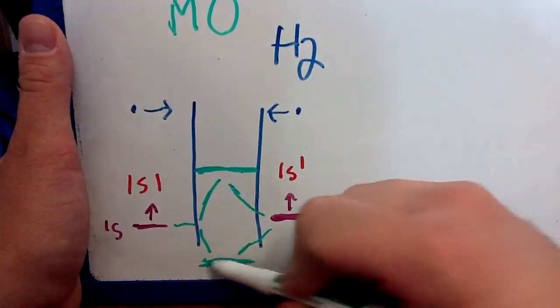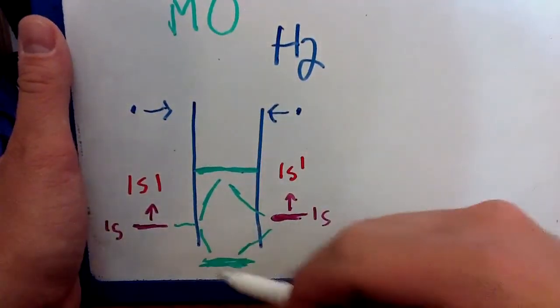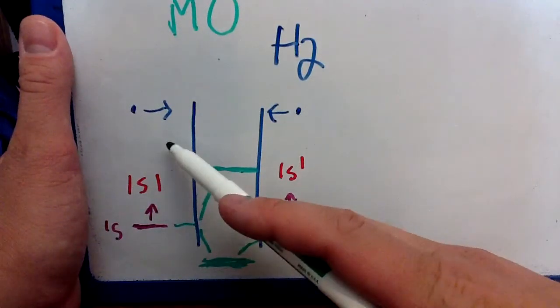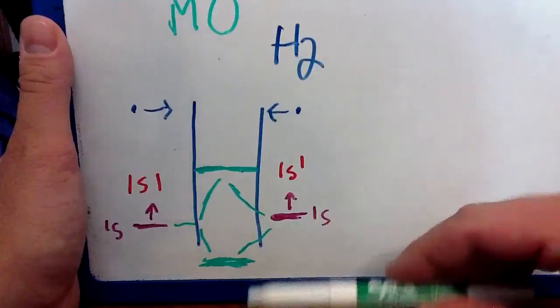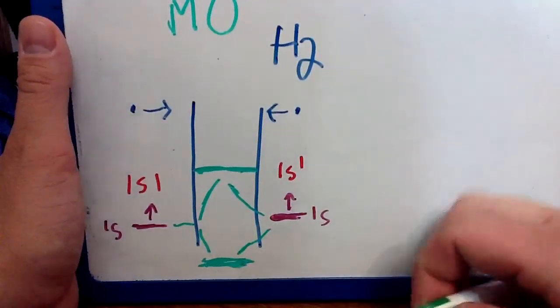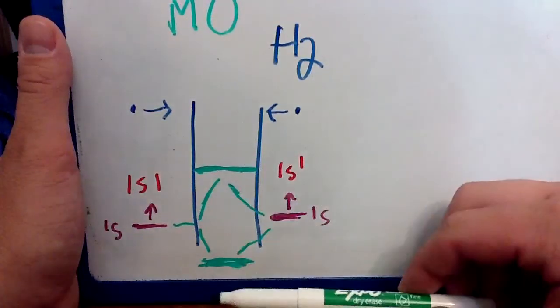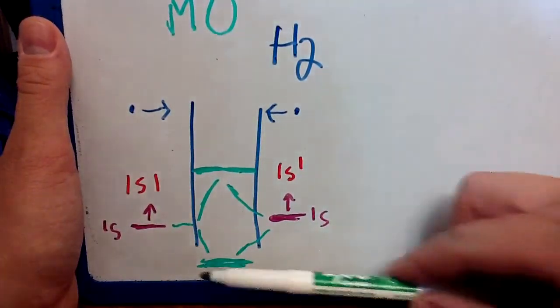There are two different orbitals that are created when I combine the 1s1 of the hydrogen here and the 1s1 of the hydrogen over here. When I combine those wave functions, I can get one of two things happen. I can get a high energy orbital and low energy orbital.